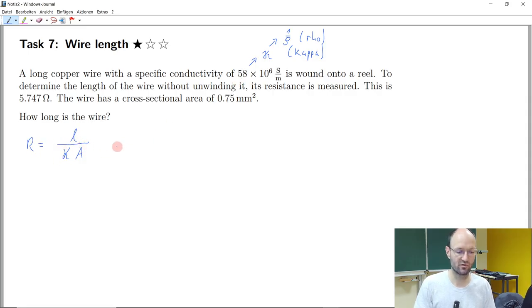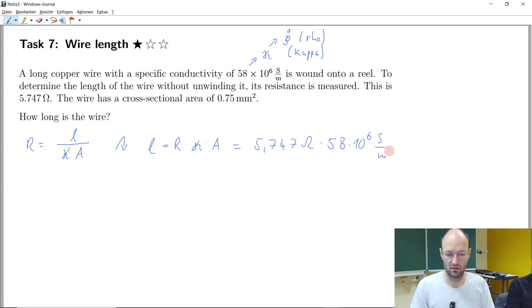So here we now have conductivity. So we more or less have all the values, we can rearrange this equation to the length. What do we get then as a new formula to calculate the length? Times area, just the product of these three quantities and so then we can insert them and say we have 5.747 ohm. We have this 58 times 10 to the power of 6 Siemens per meter.